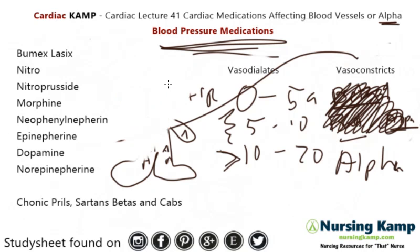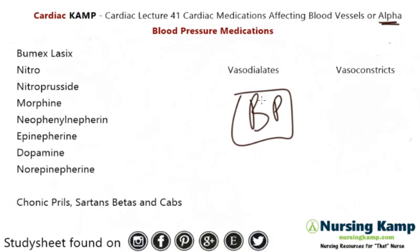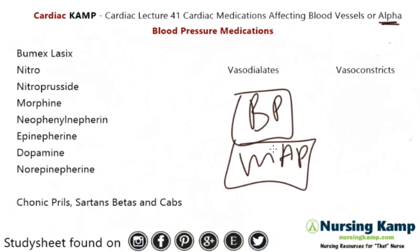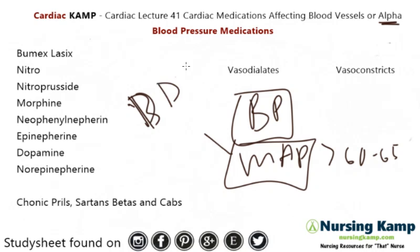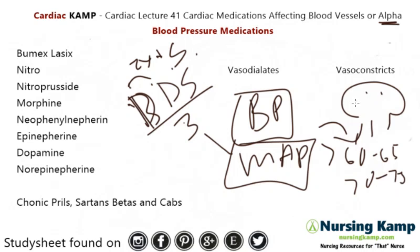Next is norepinephrine, which is mainly alpha but also has some beta — similar to Levophed. All of these affect blood pressure, so BP needs to be monitored, and the mean arterial pressure needs to be monitored as well — it should be greater than 60 to 65. How do you figure out the mean arterial pressure? Think of DDS divided by 3: diastolic times 2, plus systolic, divided by 3. That needs to be greater than 60. Also remember the brain always needs greater than 70 to 75 or it's not perfusing.